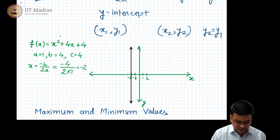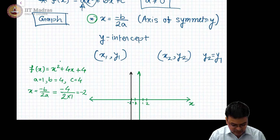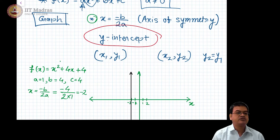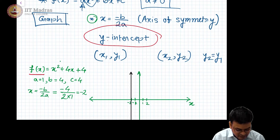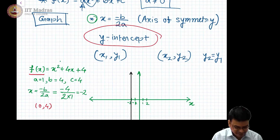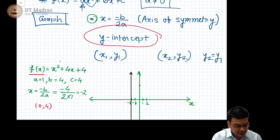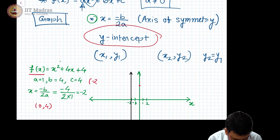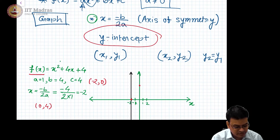Now I need to figure out the y-intercept according to our cookbook recipe. If I substitute x = 0 into this function, I get the y-intercept equal to 4. That means another point I have is (0, 4). I have figured out the axis of symmetry x = −2, and substituting −2 into x² + 4x + 4 will show that the point (−2, 0) is on the curve.